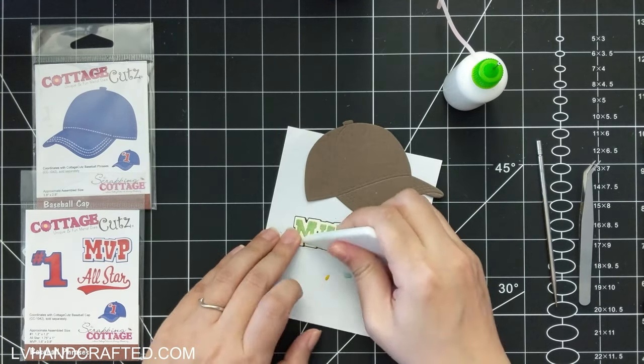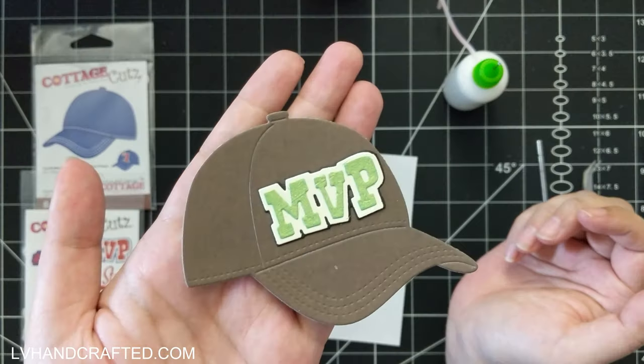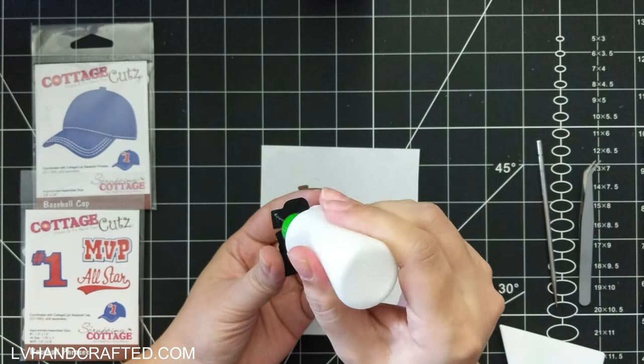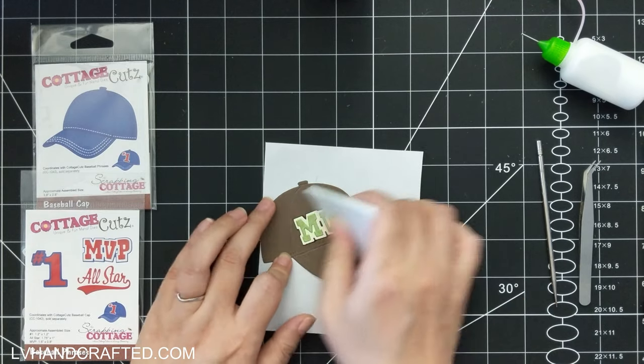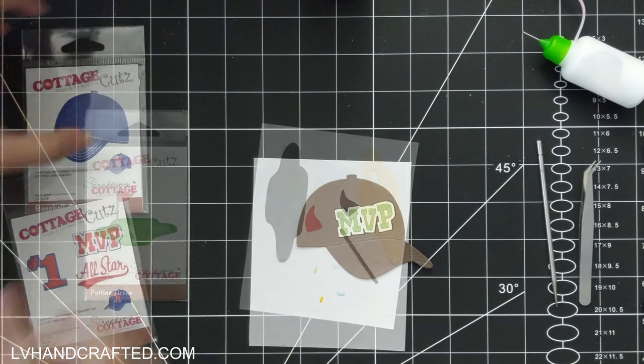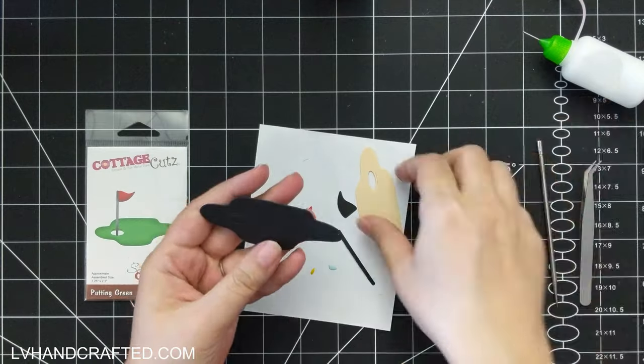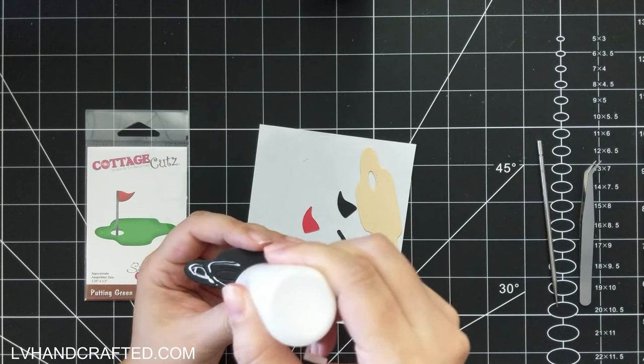So I'm going to start off by first assembling the various pieces that I'll be using. We've got a baseball cap here and there's another die set with a lot of different sentiments that you can add to your cap or use separately on their own as well.